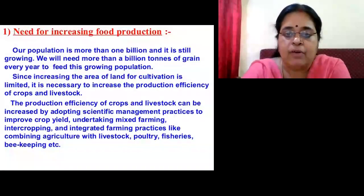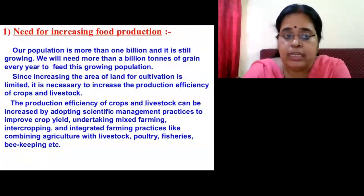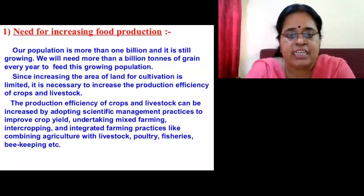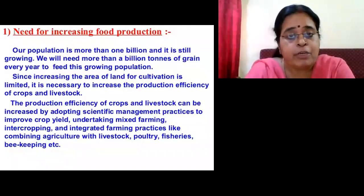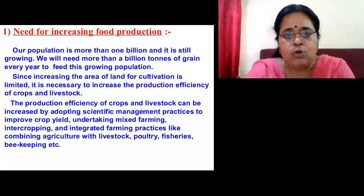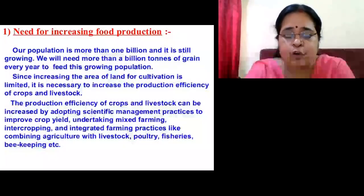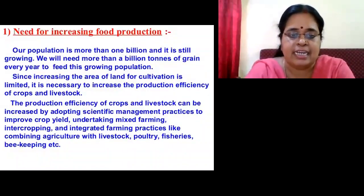Our population is more than 1 billion and it is still continuing to grow. So many mouths to feed means we need to consider food and shelter for all. We can increase production, but that is limited because if the population is increasing, we need land for shelter too. We cannot use more than a certain amount of land for agriculture. So what can we do? We can increase the quantity of production in the existing land.